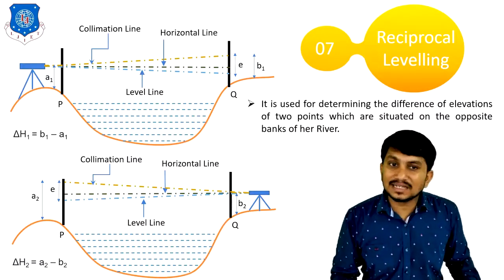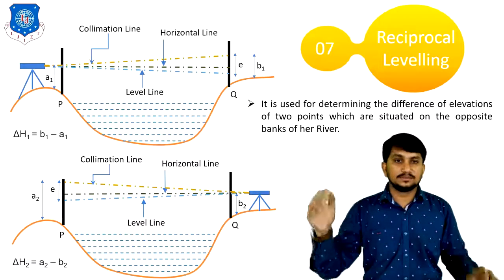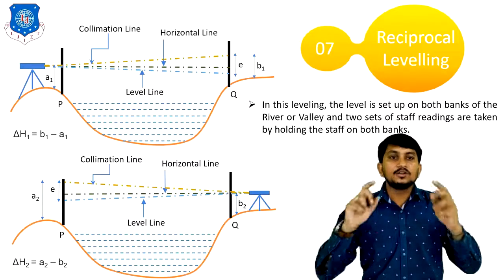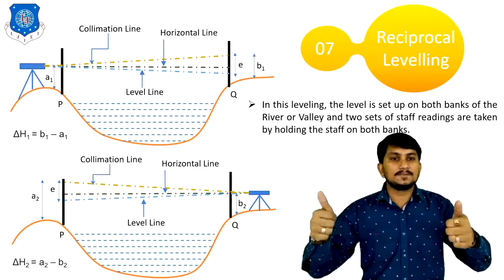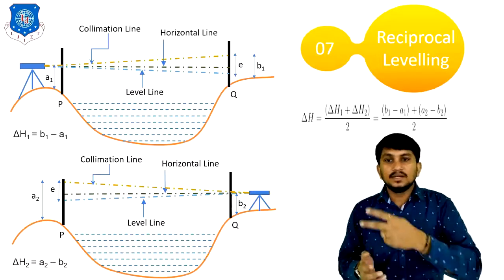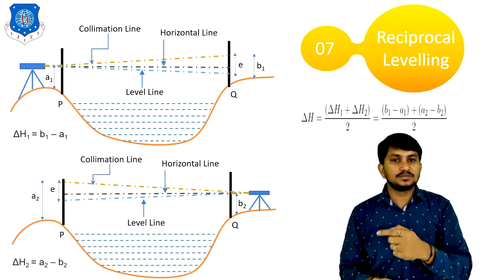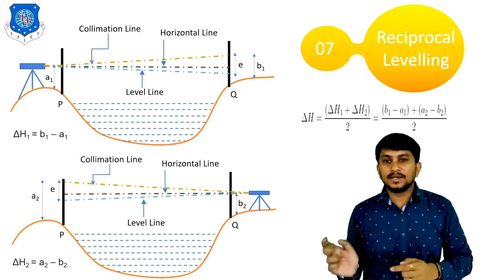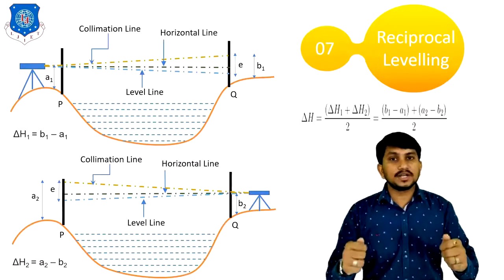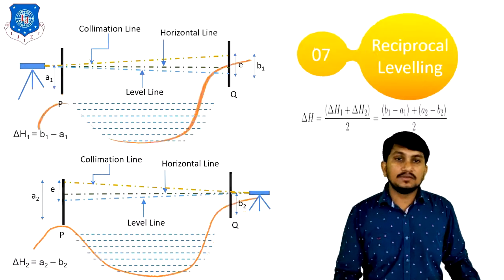Reciprocal leveling is basically used for determining the difference of elevation of two points situated on opposite banks of a river. In this method, the level is set up on both banks of the river and two sets of staff readings are taken. The level difference is calculated by averaging the two differences: delta H = (delta H1 + delta H2) / 2, which equals (B1 minus A1 + A2 minus B2) / 2. This is how we calculate the level difference between two points on opposite banks of a river.